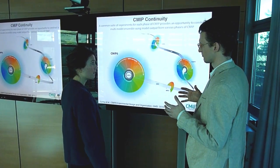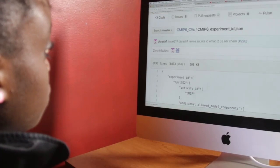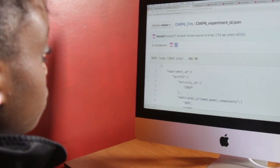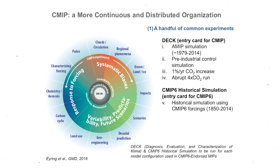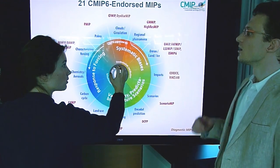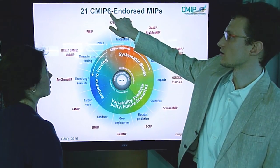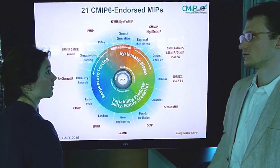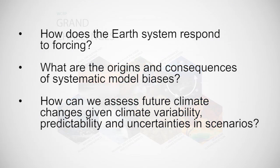To ensure consistency within CMIP 6 and with prior and future phases, each group runs historical simulations and a handful of common basic experiments organized through the so-called DECK experiments — Diagnostic, Evaluation, Characterization of Klima experiments. More than 30 groups around the world have registered their models, and we have 21 model intercomparison projects endorsed by the CMIP panel, based on their relevance to the grand challenges of the World Climate Research Program and the fundamental science questions of CMIP 6.